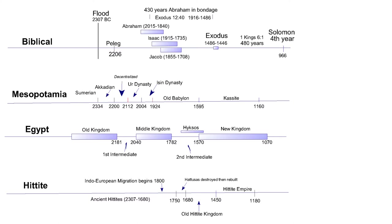In episode 9 we discussed the Ur and Isin dynasties from 2112 to 1924 BC. It was a time in lower Mesopotamia of massive migrations and a lot of internal strife, with very few periods of robust international trade going on.